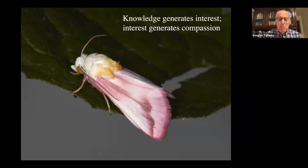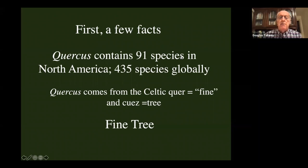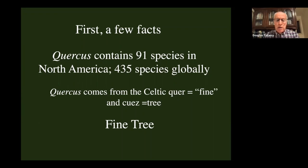That was the goal of the book. A few facts: the genus Quercus contains 91 species in North America and 435 species globally. The word Quercus comes from the Celtic 'quer' meaning fine and 'ques' meaning tree — so oaks are fine trees, and they are indeed.